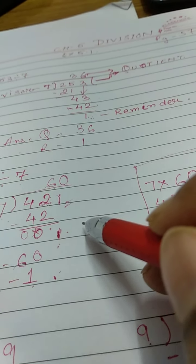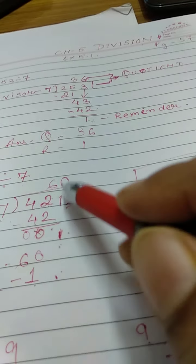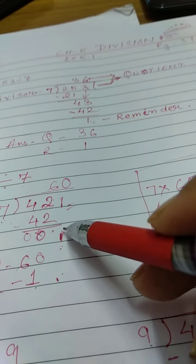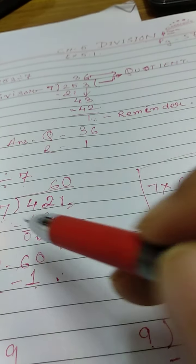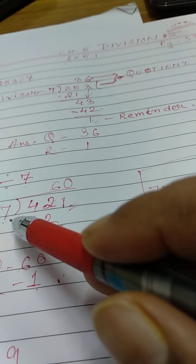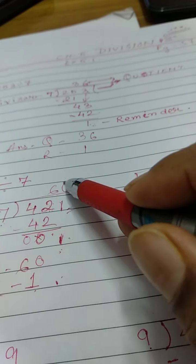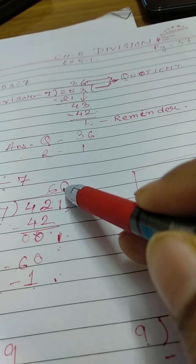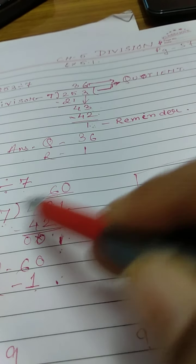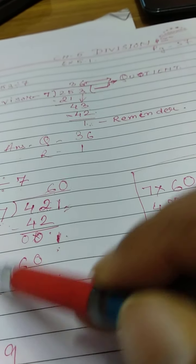So I don't have anything to write here. So what will happen? Here the sum is ending? No, sum is not ending. 1 is smaller than 7, so I cannot do the division. So here I am writing 0. So the answer will be 60. Quotient will be 60, remainder will be 1.